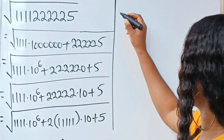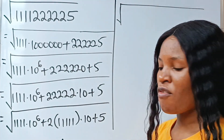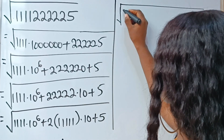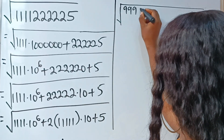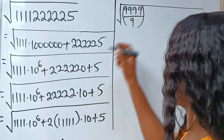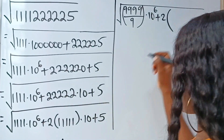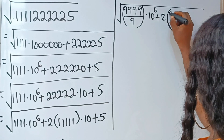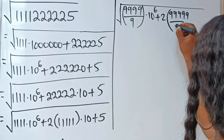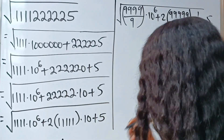Now we continue. So this is the same thing as: square root of 1,1,1,1,1 — which is the same as 9,9,9,9 divided by 9, right? All right. Multiplied by 10 to the power of 6, plus 2 brackets — the same thing here — we have 9,9,9,9,9 (five of them) divided by 9, multiplied by 10 to the power of 1, plus 5.